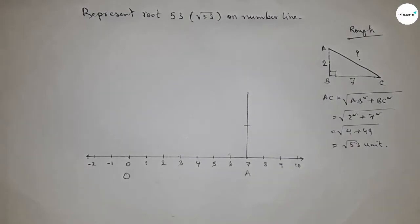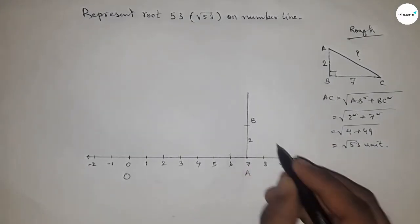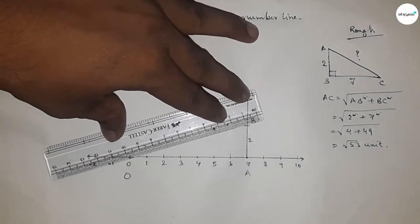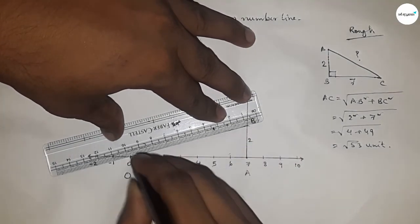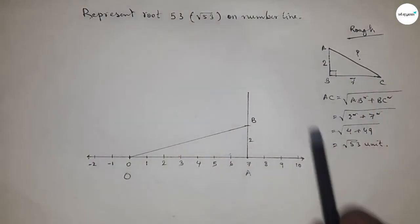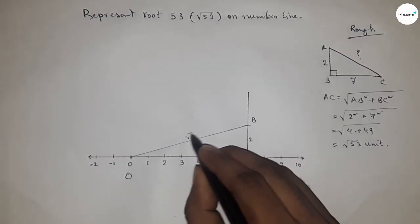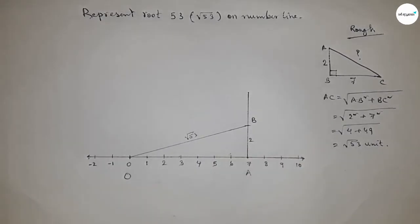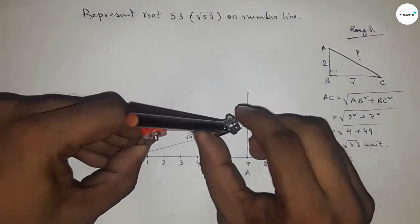So this is B point and this is two unit length. Now joining this. So from this we can say that OB equal to root 53 unit. Now taking the length OB by compass and drawing.